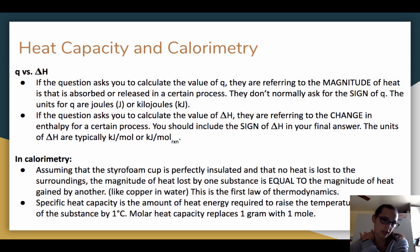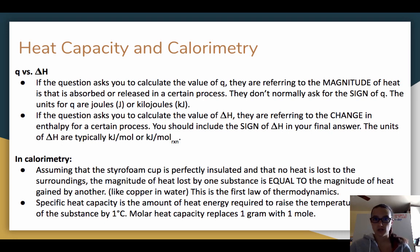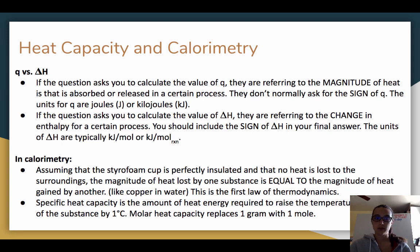When we're looking at heat capacity and calorimetry — topic 6.4 — remember that Q versus delta H are two different things. Q is just the heat: it gives you joules or kilojoules for a specific amount of substance. If a question asks you to calculate Q, they just want the magnitude of heat absorbed; units are joules or kilojoules. If a question asks you to calculate enthalpy, delta H, then you should include the sign of delta H. Delta H takes into account the moles — you divide Q by the moles to get delta H — and its units are kilojoules per mole or kilojoules per mole of reaction.